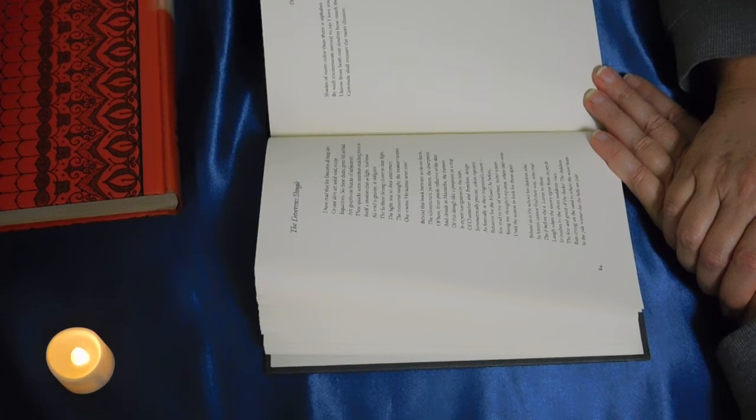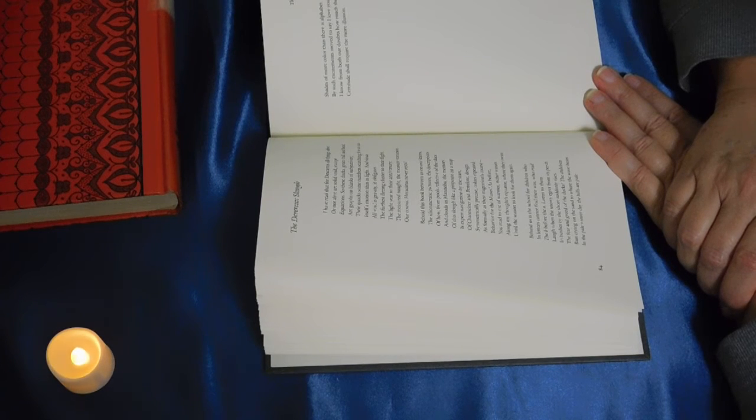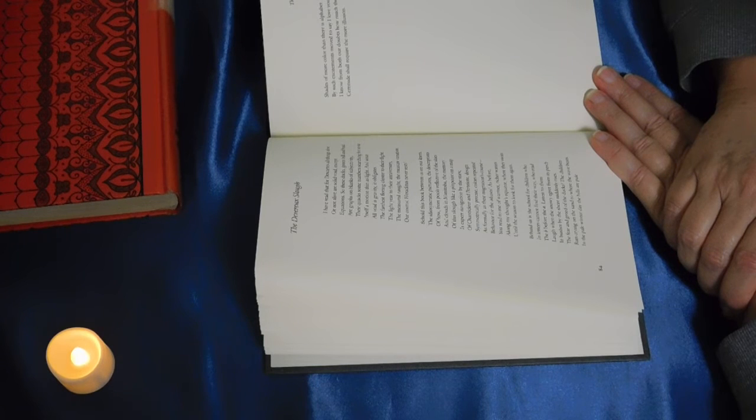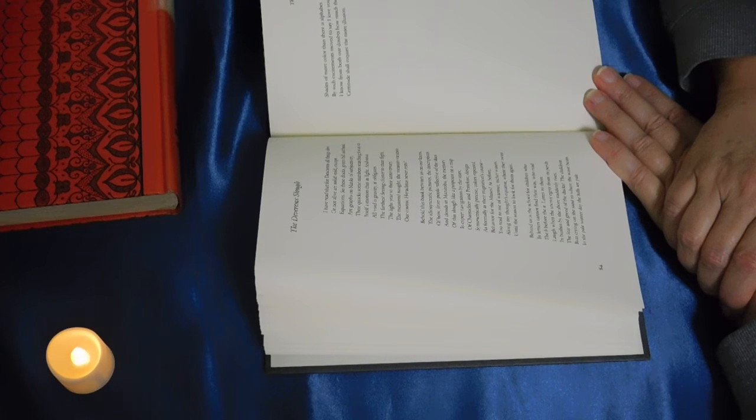Behind us is the school for children who in letters cannot find their way. Who read the B before the A. Listen to them laugh when the snowy egret from its perch in bushes by the shore suddenly rises. The fear and greed of the ducks. The children run crying on the sand to where the wave beats.